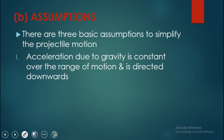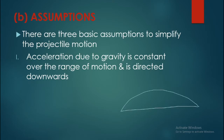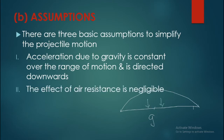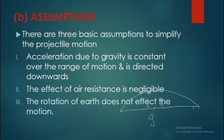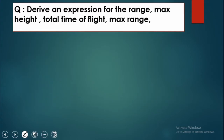The first assumption is that acceleration due to gravity is constant over the range of motion and is directed downward. The force of gravity is applied to the projectile and we assume gravity is constant, directed toward the center of the earth. The second assumption is that the effect of air resistance is negligible, and the third is that the rotation of the earth will not affect the motion of the projectile.